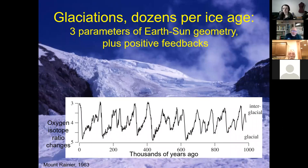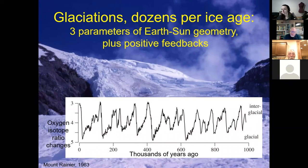There are many, many glaciations within each ice age, and these are controlled by Earth-Sun geometry. In the graph at the bottom, we see high peaks which could represent high temperatures, high sea level, and lack of glaciers; and low peaks which represent the peaks of glaciation, with lots of ice cover on the Earth and colder temperatures.